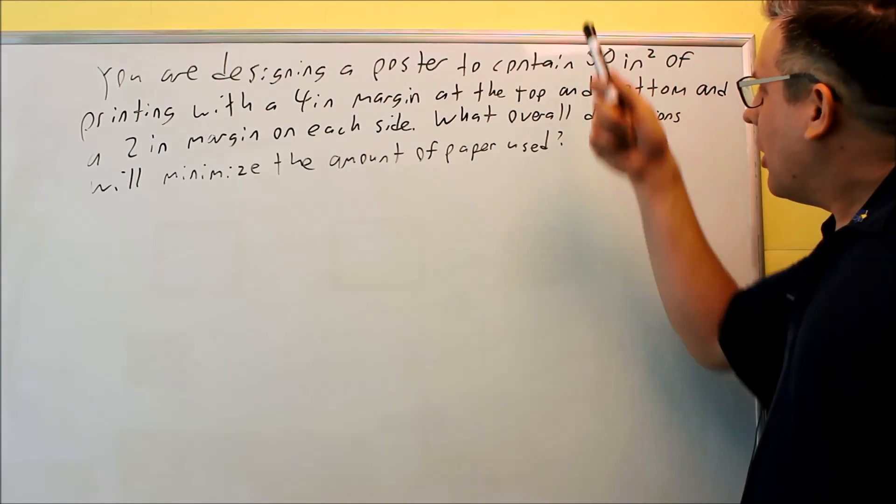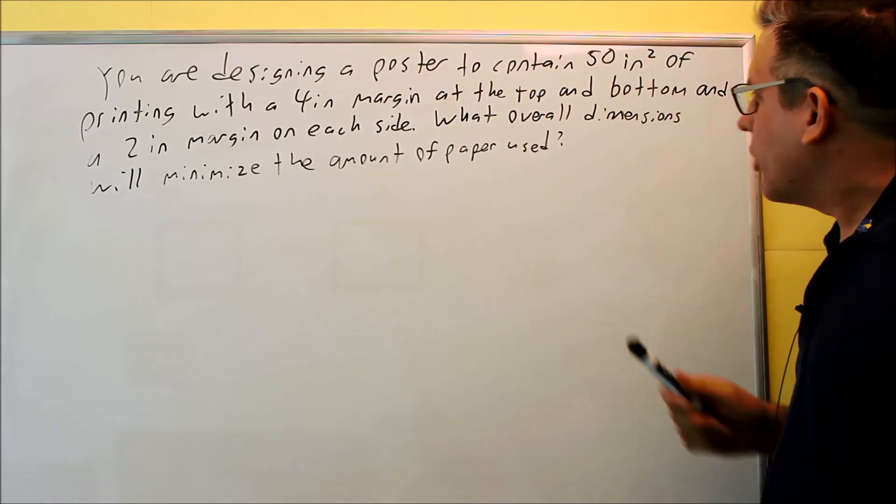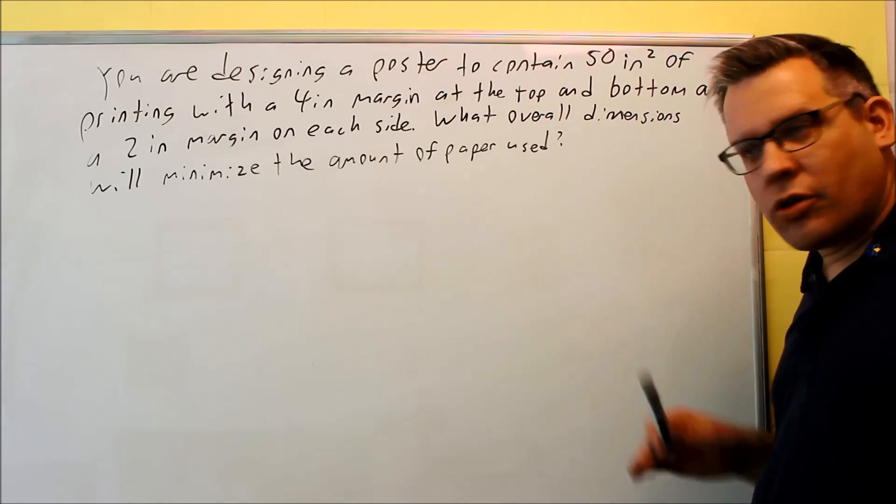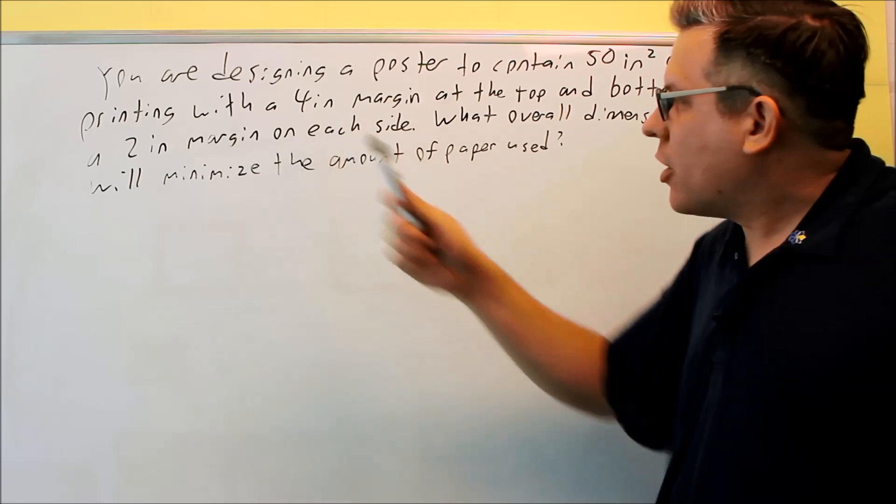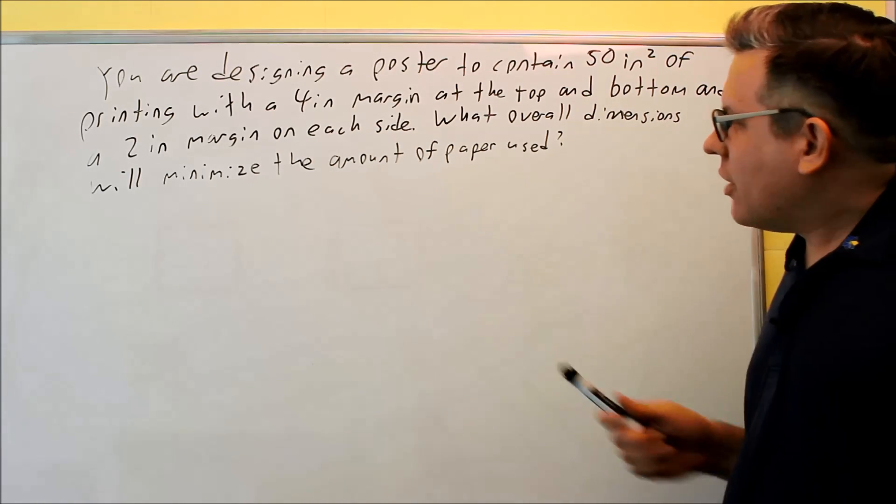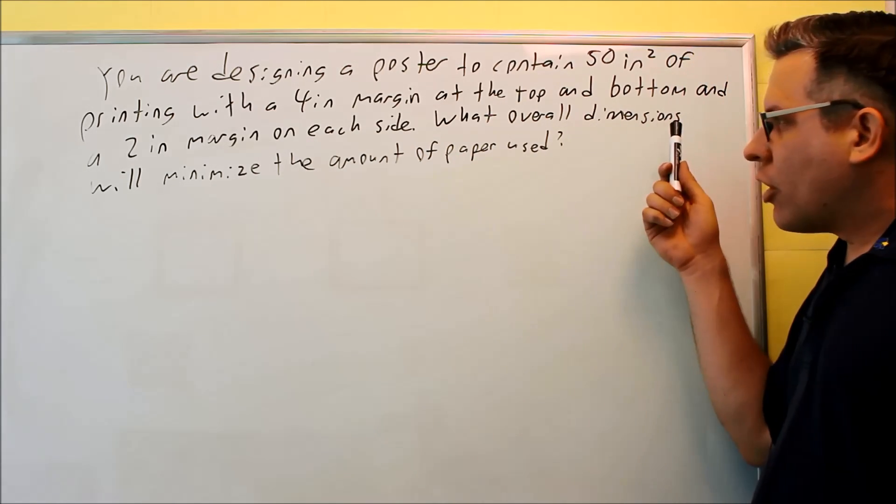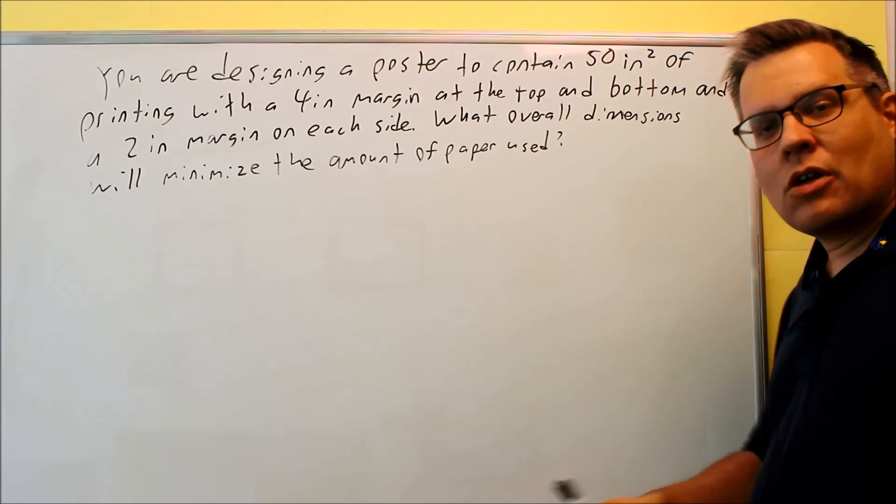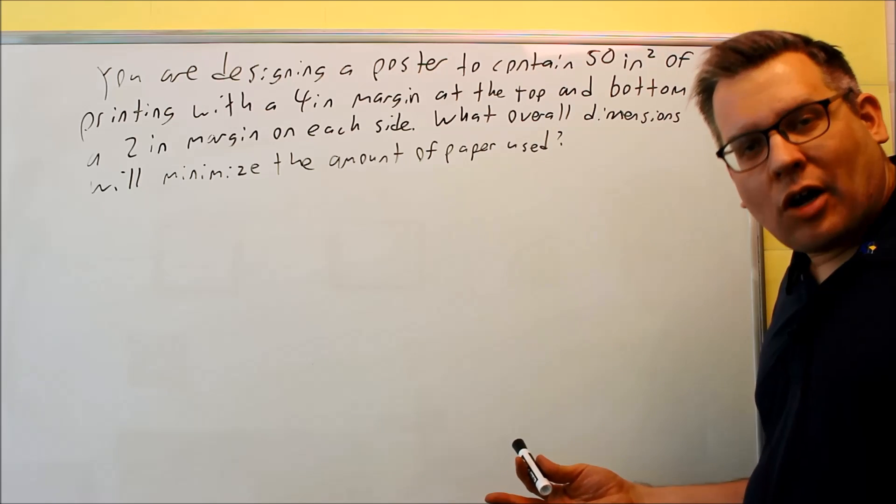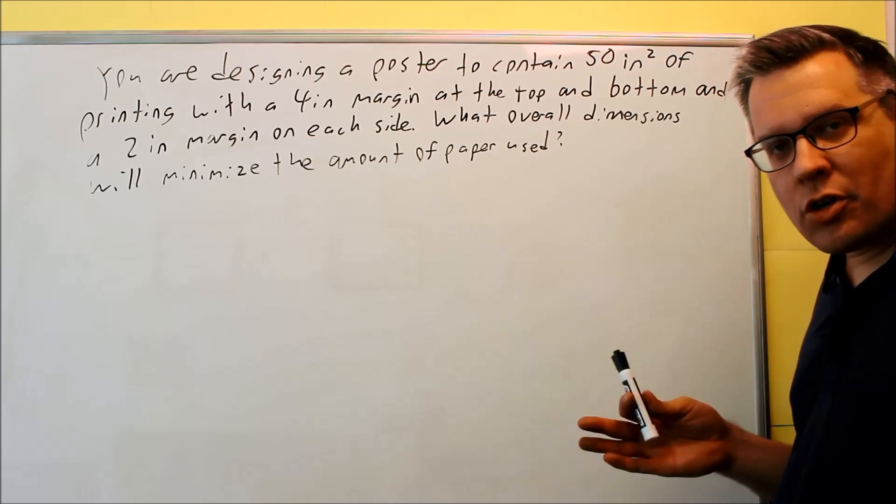You want to design a poster, and the poster's going to contain 50 square inches of printing material. And you want a 4 inch margin at the top and bottom, and a 2 inch margin on each side. And it's asking what overall dimensions will minimize the amount of paper used. If we minimize the paper, that means that we can print it off at a lower cost because we're not using as much paper here.